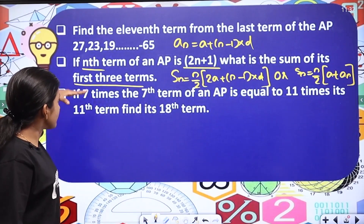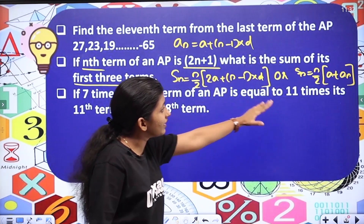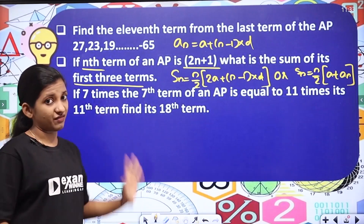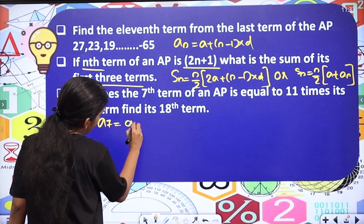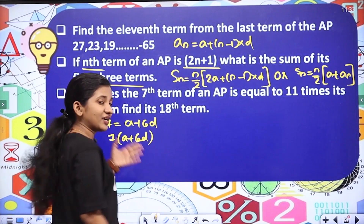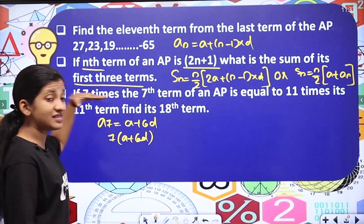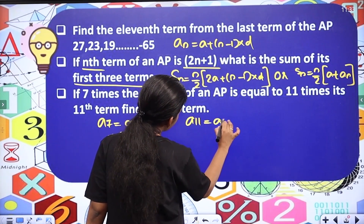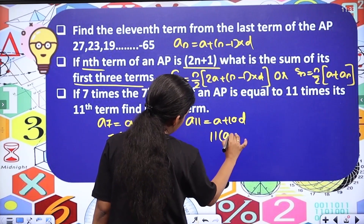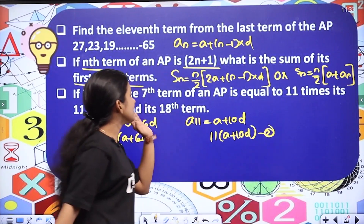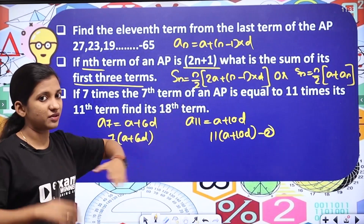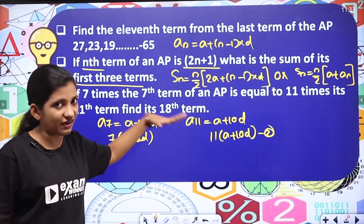The next question is: if 7 times the 7th term of an AP is equal to 11 times the 11th term, then find its 18th term. We have that equation formula. 7 times the 7th term: the 7th term is a plus 6d, so 7 into a plus 6d. 11 times the 11th term: the 11th term is a plus 10d, so 11 into a plus 10d. Then we solve for the 18th term, which is a plus 17d.